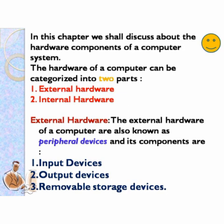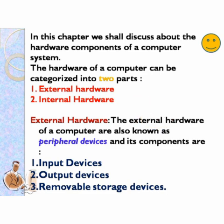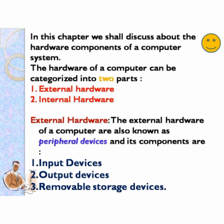In this chapter, we shall discuss about the hardware components of a computer system. The hardware of a computer can be categorized into two parts: number one, external hardware; number two, internal hardware. The external hardware of a computer are also known as peripheral devices, and its components are input devices, output devices, and removable storage devices. So these all are peripherals.